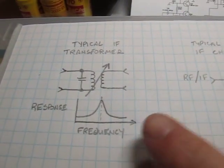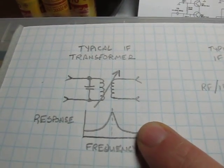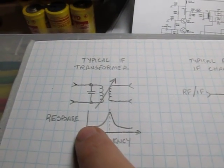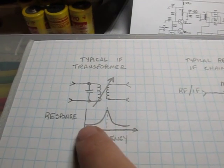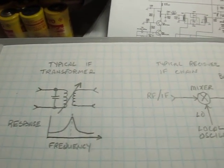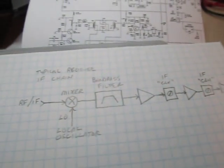We're going to talk about how to tune a typical IF transformer, which you'll typically find in a receiver chain. It's just a resonant circuit that basically rejects signals that are above or below the frequency that it's tuned to. And that's typically how you get selectivity in a receiver, at least part of it anyway.